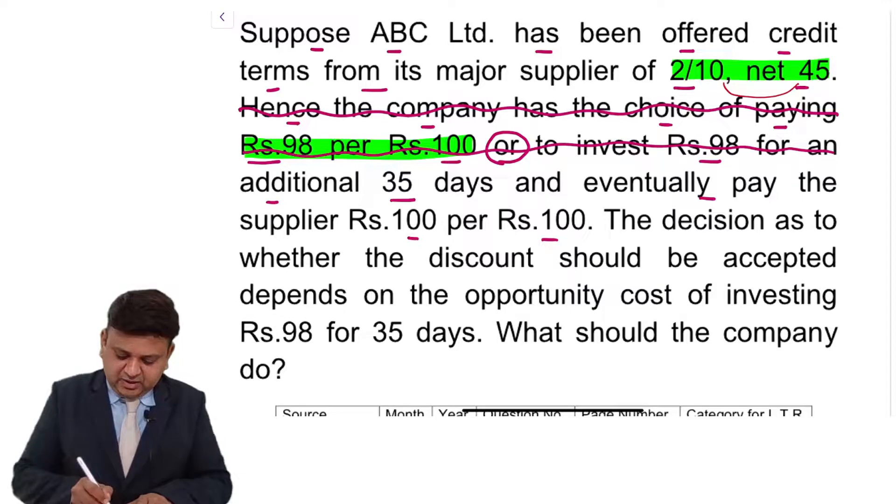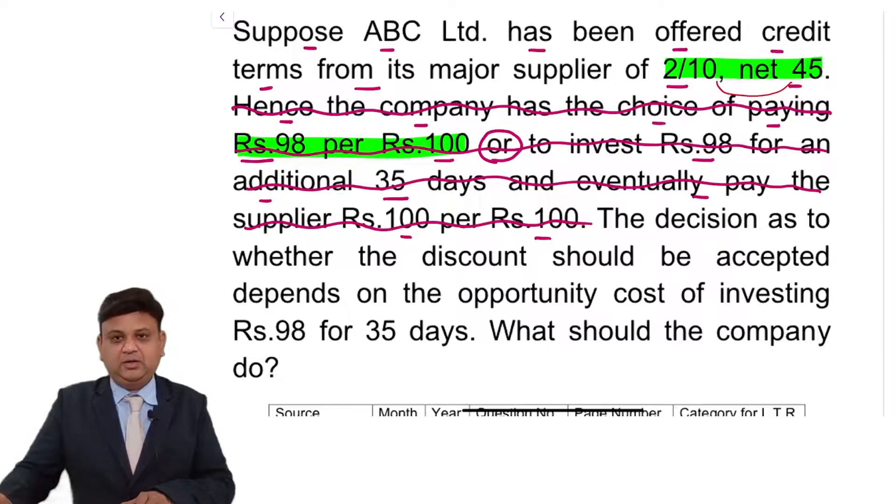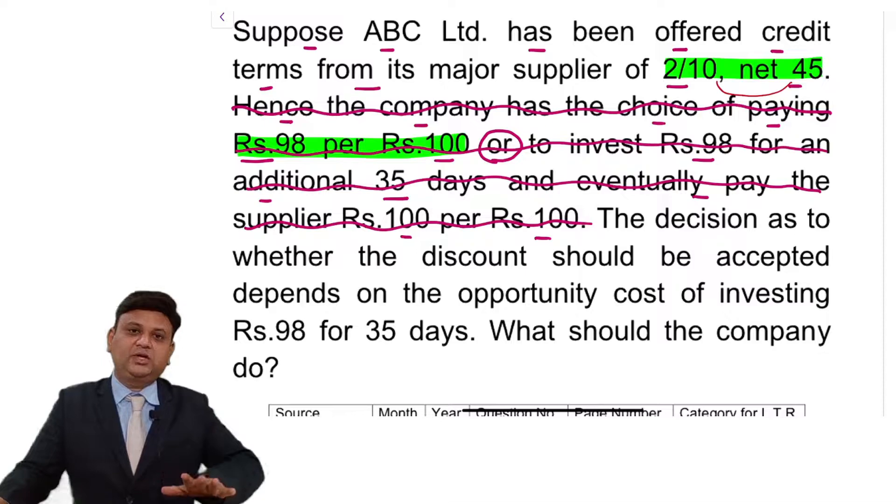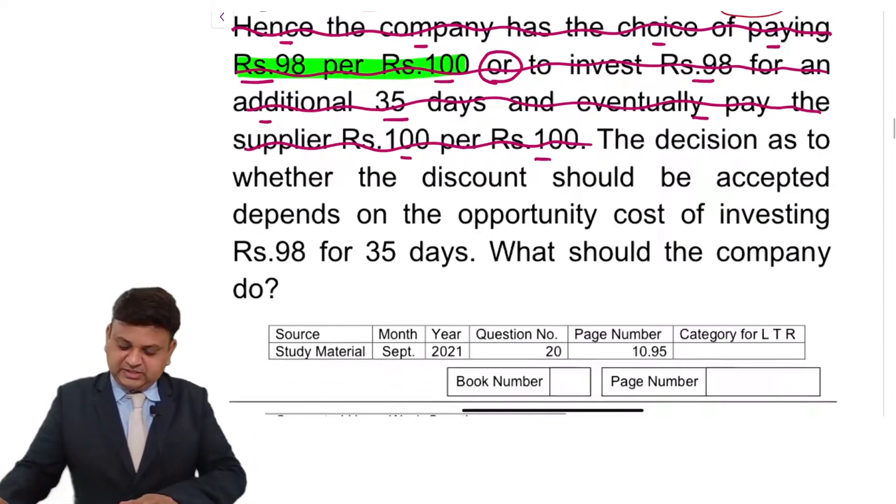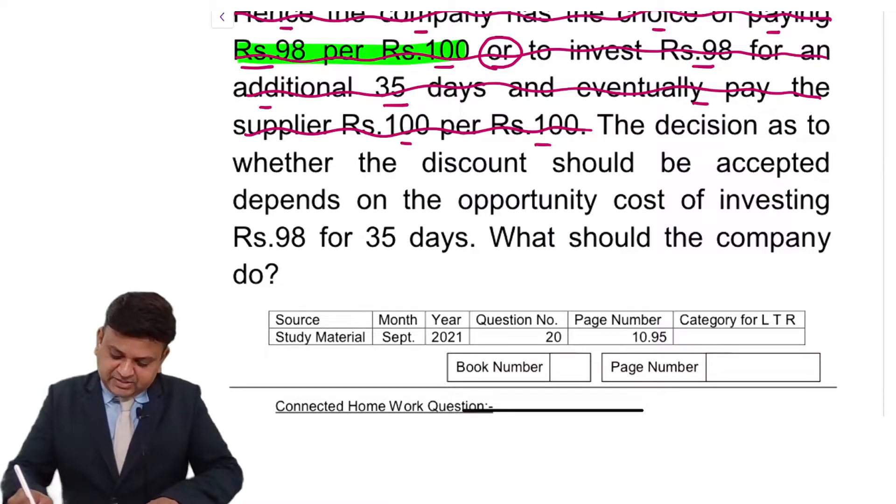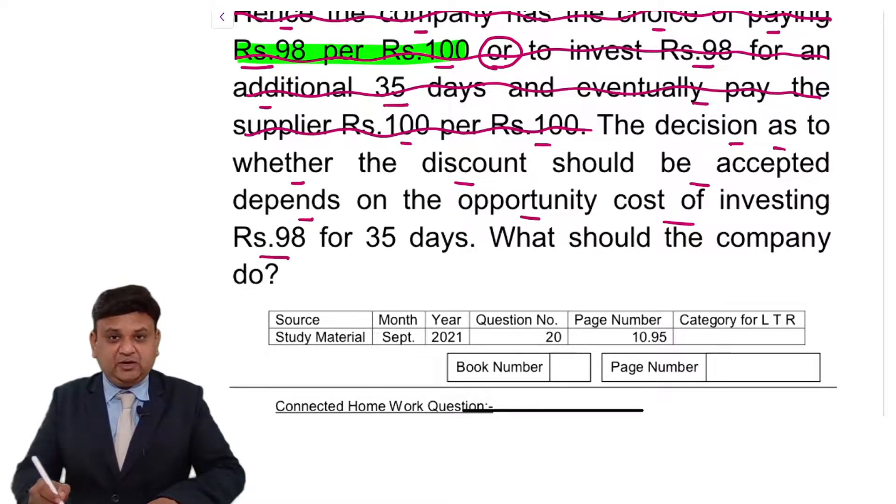When you provide 2/10, net 45, I am going to highlight that you need to note this because in other questions the explanation is not given. The decision as to whether the discount should be accepted depends upon opportunity cost of investing Rs. 98 for 35 days. What should the company do? That is the question.